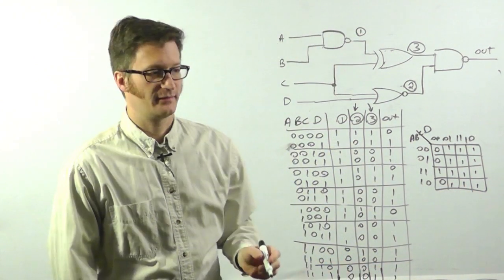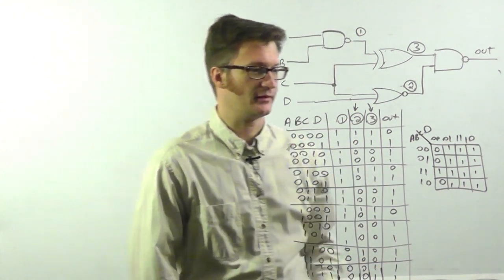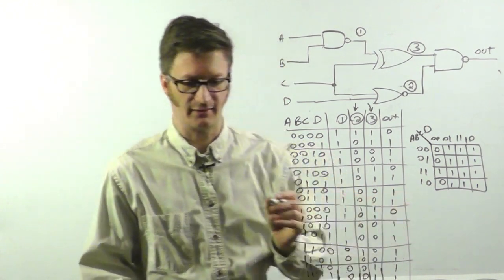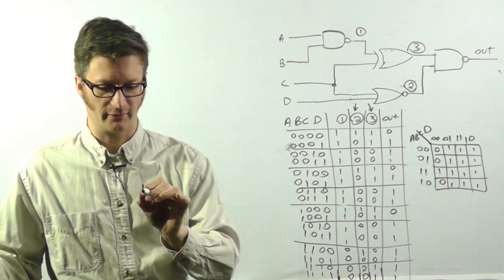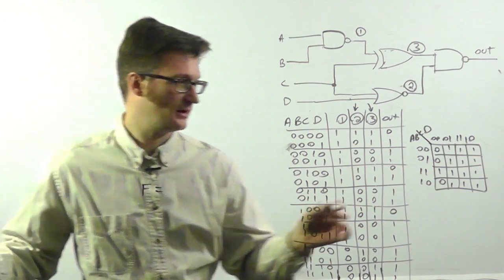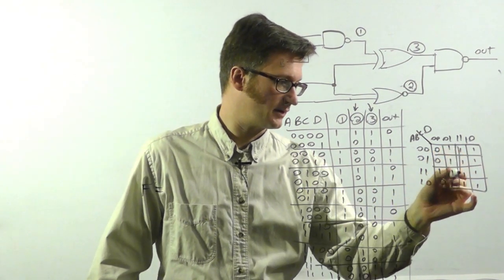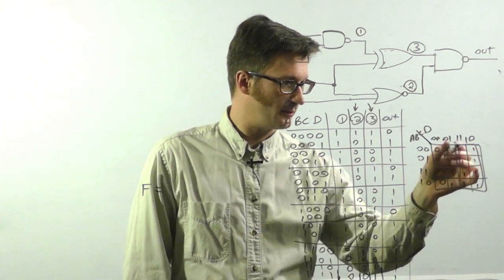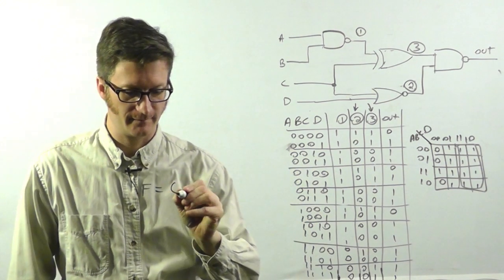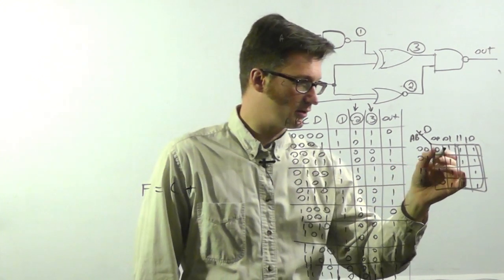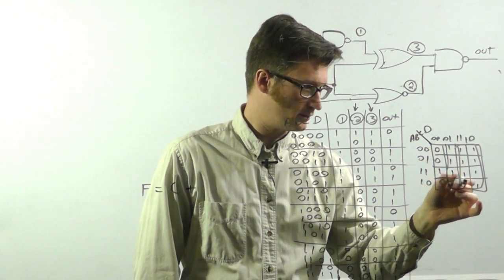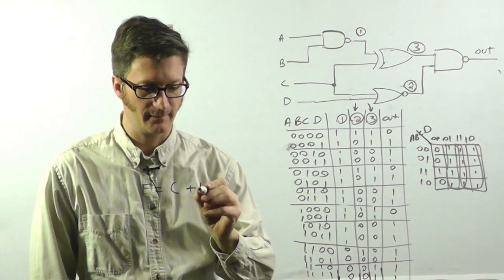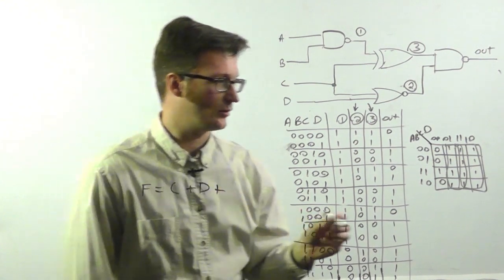All right. So what I want to do is I want to figure out what the logic function for this is. And I'll come over and do it over here. F equals. Start by grabbing those. And what's common to those is C. Or. Grab those. And what is common is D. Or.